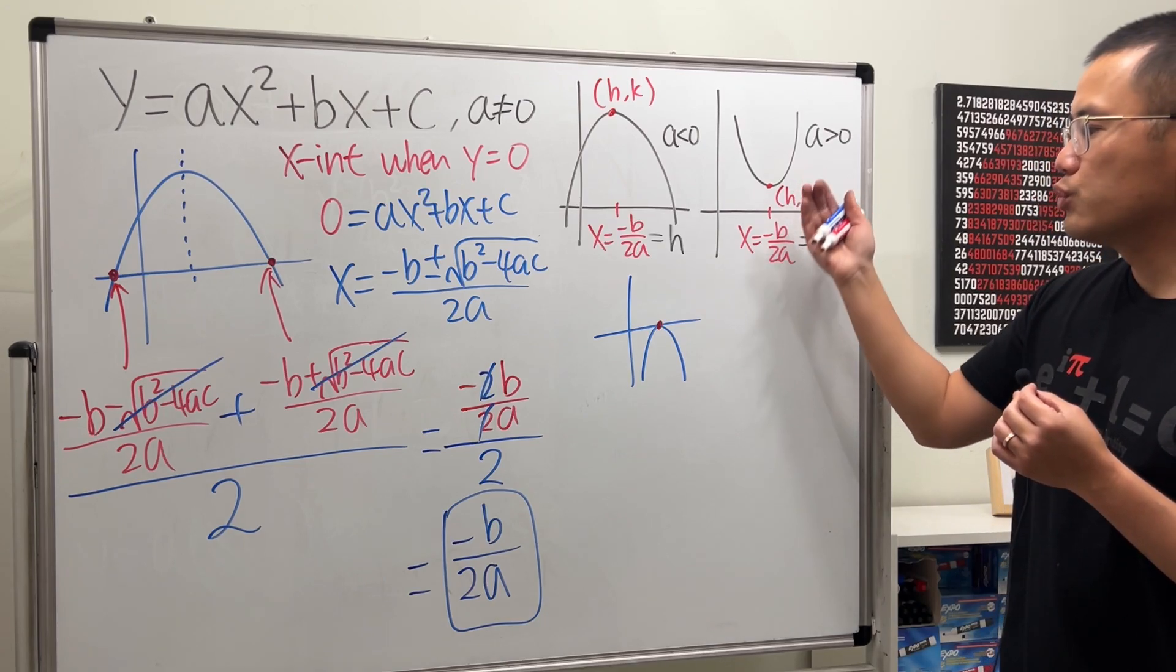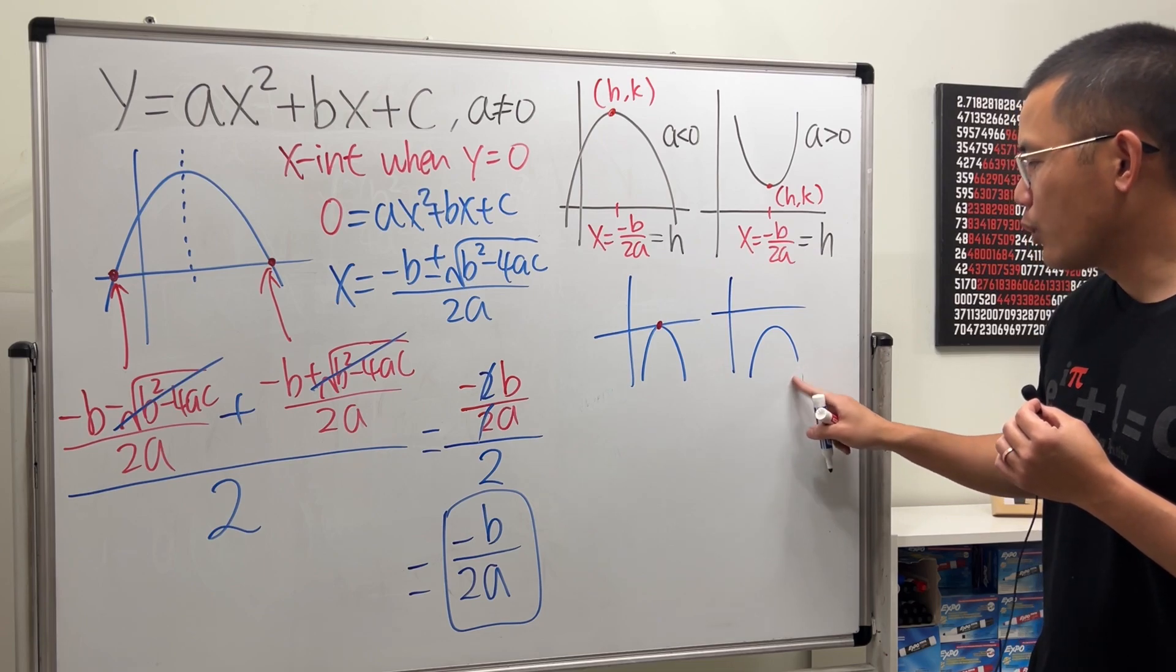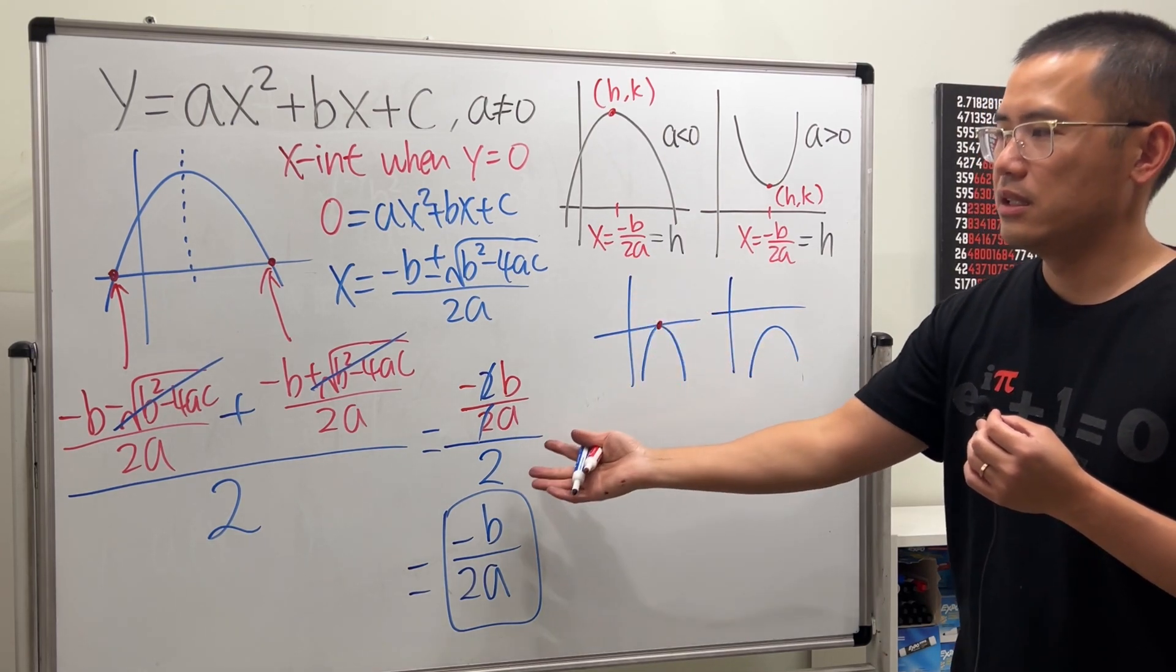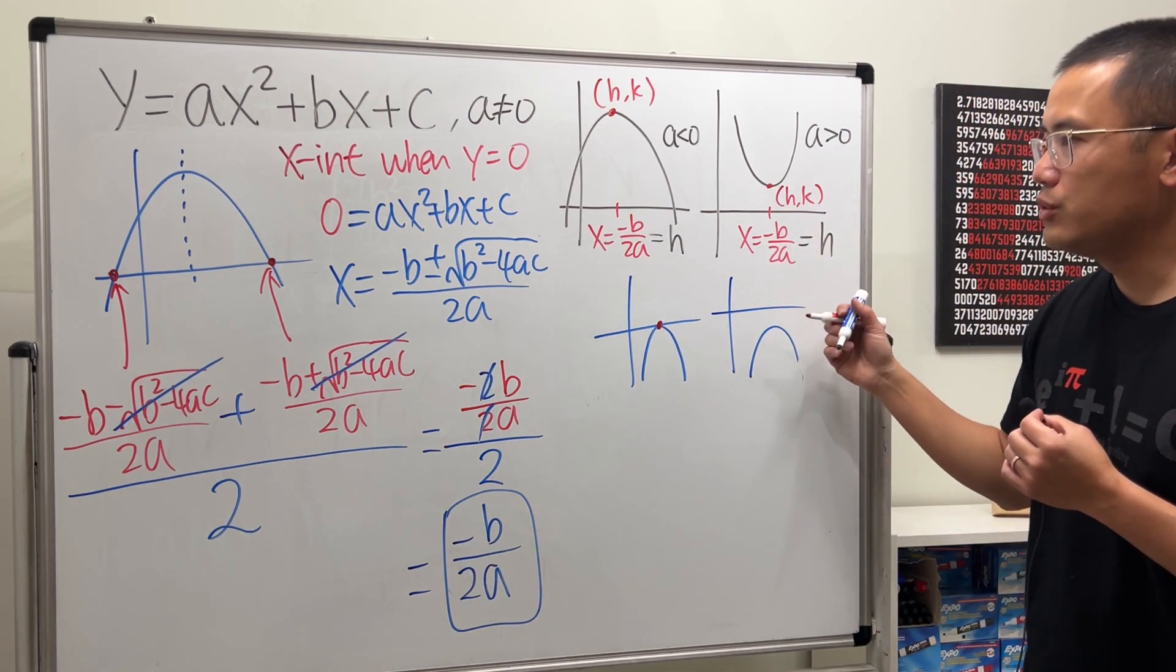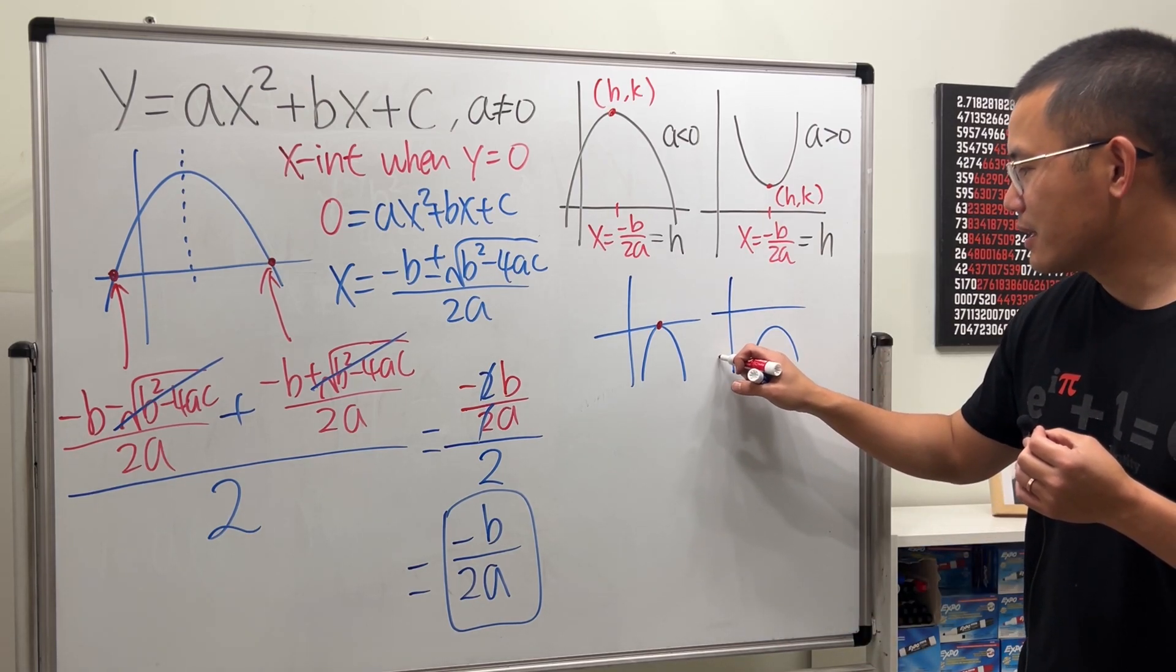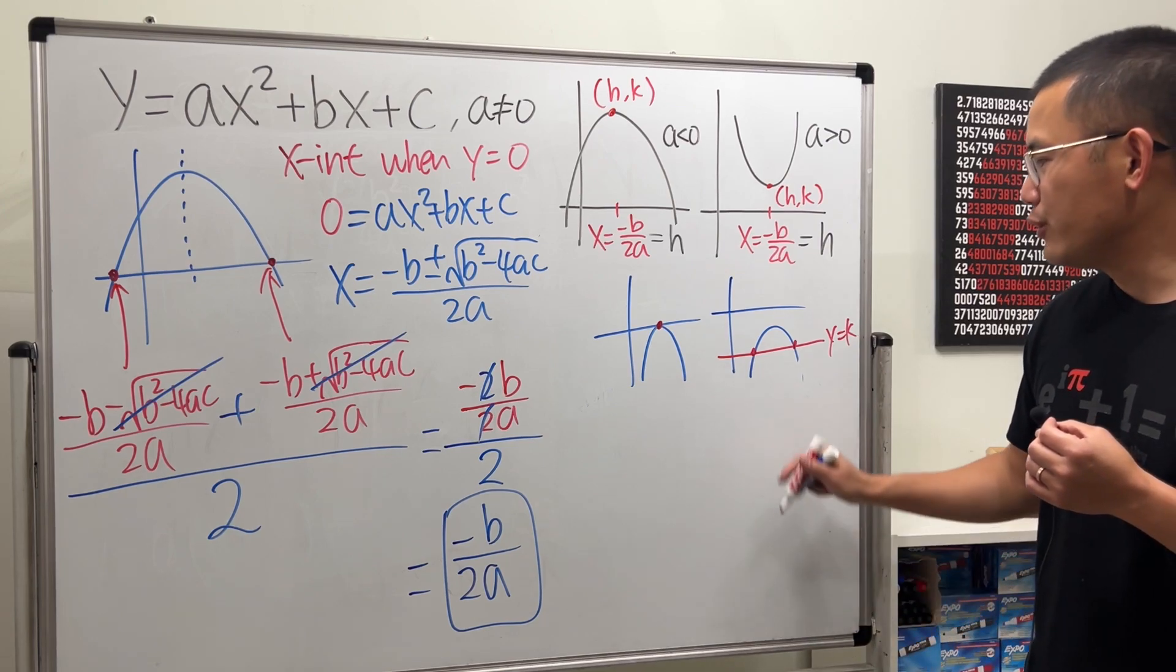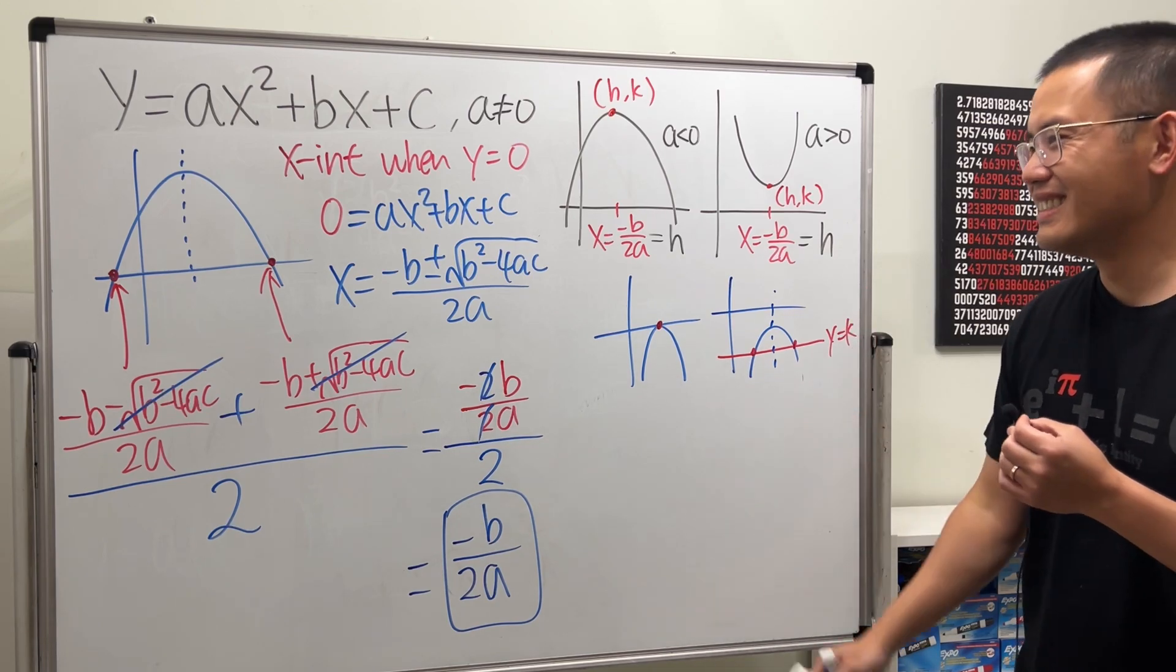This argument will work really nicely when the parabola does cross the x-axis especially at two different points. Suppose it doesn't though, then this argument might not work so nicely unless you go to the complex world. But I think if you just want to get a feel of why this formula is like this, then I think this argument shall be pretty satisfied. If you really want to, what you can really do is you can consider a horizontal line somewhere and then you find the solutions and then you find the middle.